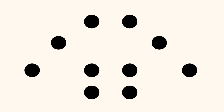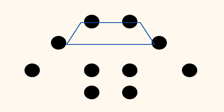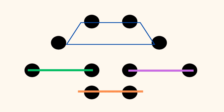Or maybe you saw four dots in the shape of a trapezoid on the top and three horizontal lines with two dots each on the bottom. You know that three groups of two equals six and six plus four equals ten.